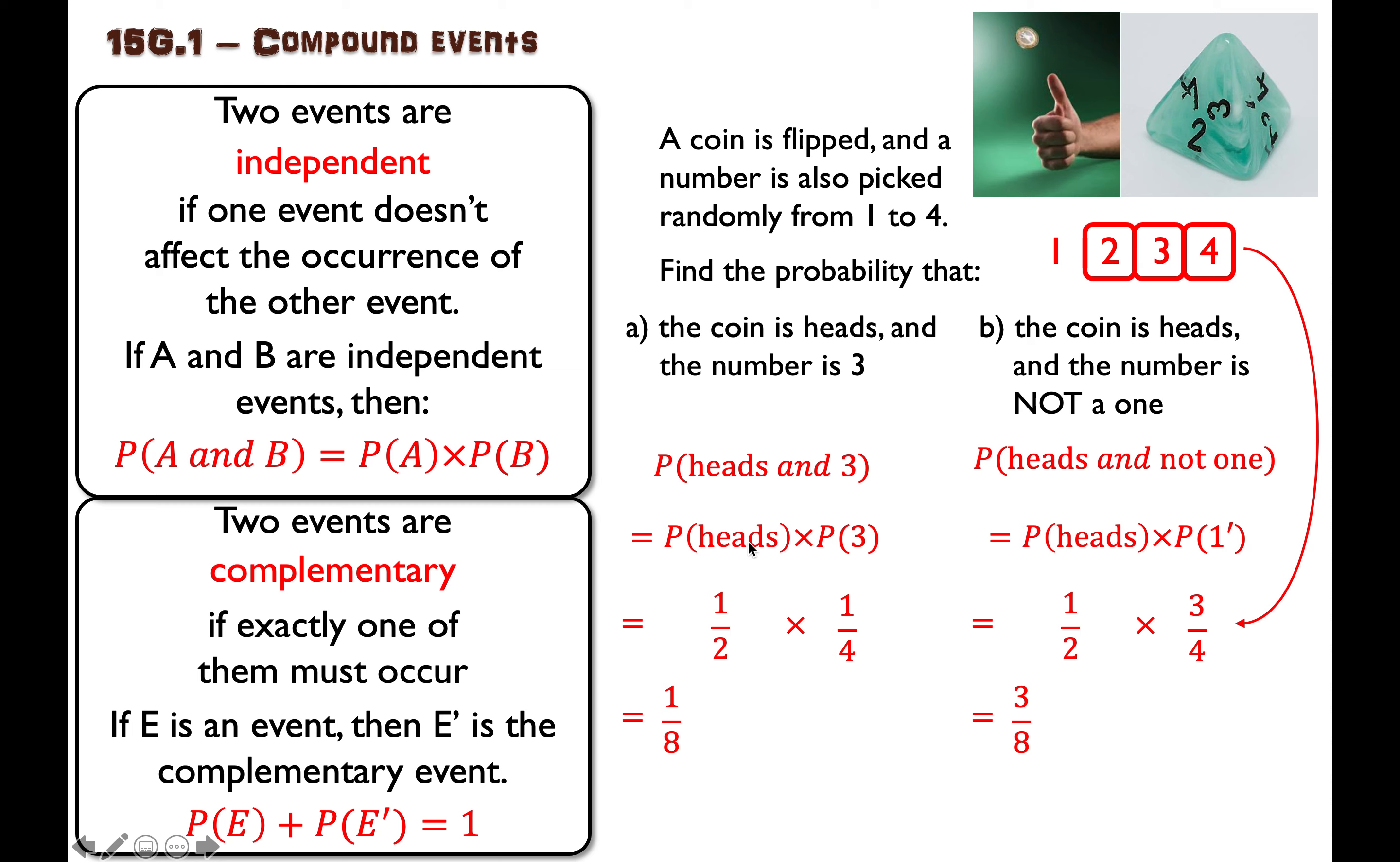That is how you can break down a compound event where the two events are independent into two simpler events and just multiply them together. I hope this has been helpful and I'll see you in the next video. Bye everyone.